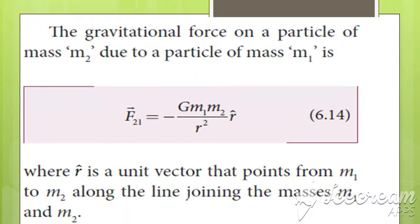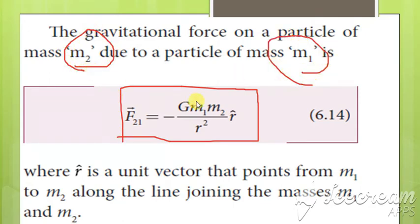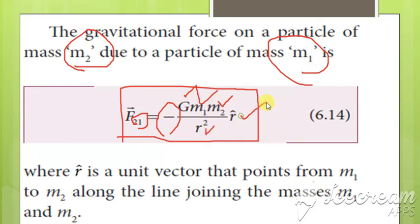The general formula for gravitational force is F = G·M1·M2 / R² · R̂. Here, the force on particle M2 due to M1 is written as F₂₁. So, F₂₁ = −G·M1·M2 / R² · R̂, where R̂ is a unit vector.